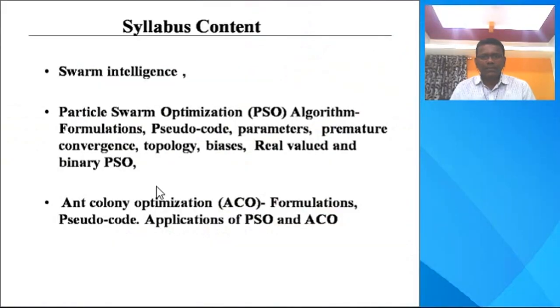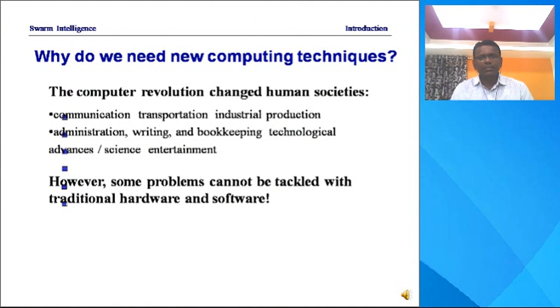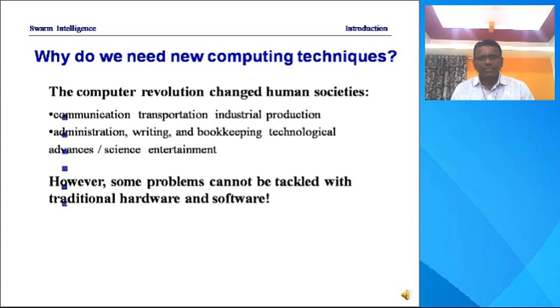That is all about evolutionary systems. Now talking about today's chapter — Swarm Intelligence. Why do we require new computing techniques? Because the rapid development in science and technology changes the world rapidly. Communication, transportation, industrial productions, administration, writing and bookkeeping, and technological advances are some of the areas that change very rapidly.